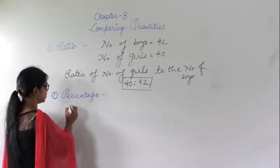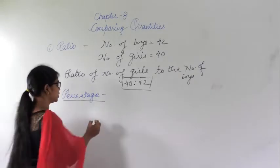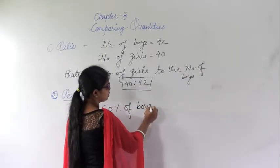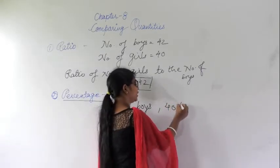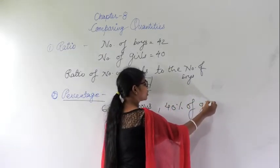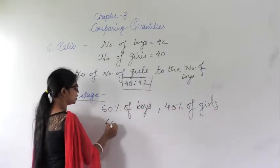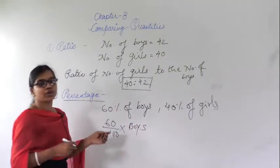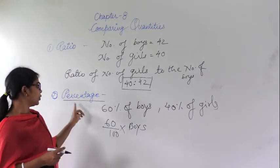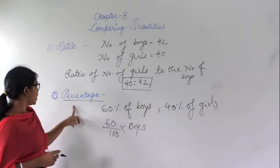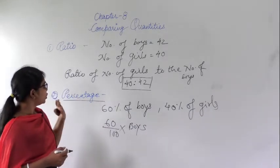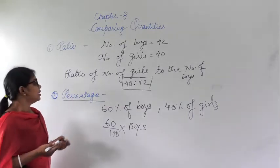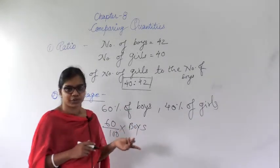Similarly, you have studied about percentage. Percentage means suppose you are given 60% of boys or 40% of girls. 60 percent means divide by 100 and multiply by the number of boys. Now what will be given is the ratio and you have to convert it into percent, and similarly sometimes it will be given in percent and you have to convert it into ratio.